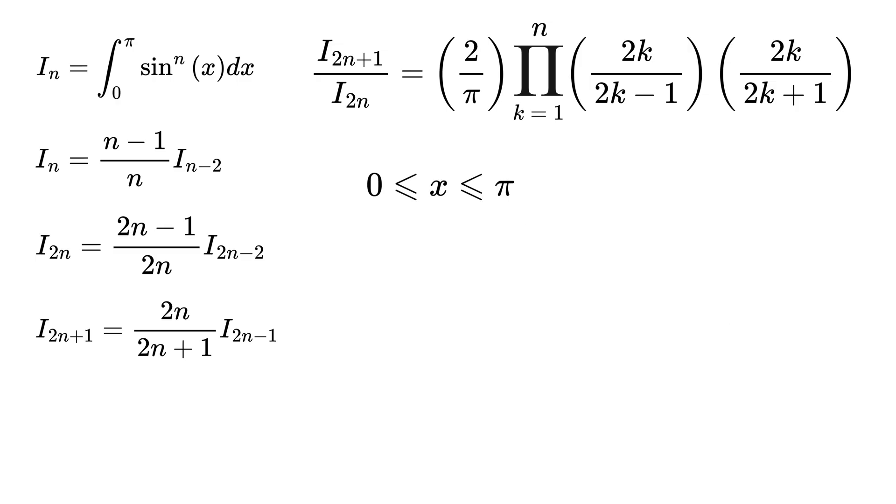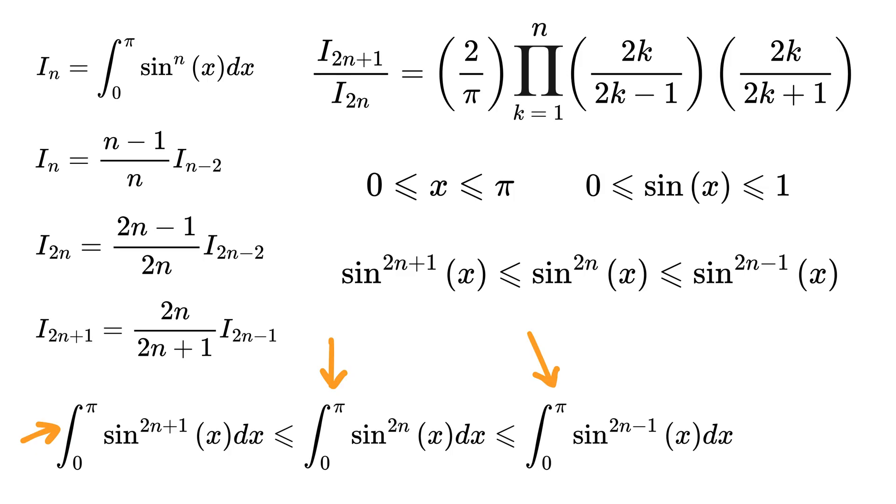Now in this range of 0 to pi, sine of x is always between 0 and 1. So sin^(2n+1)(x) will be greater than sin^(2n)(x), which will be greater than sin^(2n-1)(x). So if we take the integral from 0 to pi of each of these functions, we will get the same inequality like this.